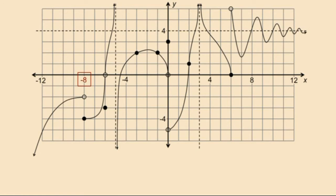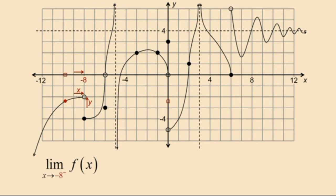Now let's begin with x equal negative 8. Be sure to look at how both the x and y values are changing. Notice as x approaches negative 8 from the left, y is approaching negative 2. We can visually see that the limit as x approaches negative 8 from the left of f of x is in fact negative 2.